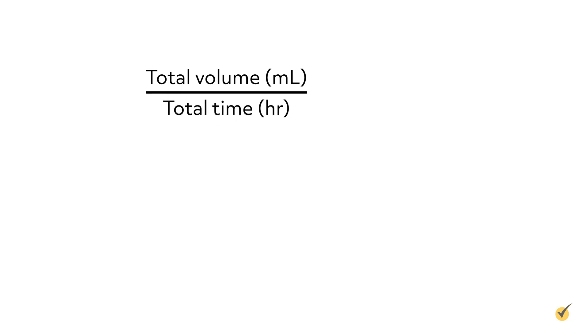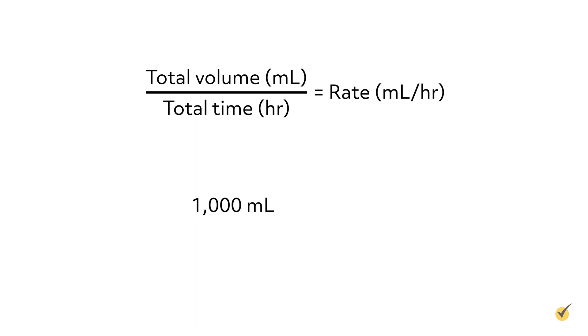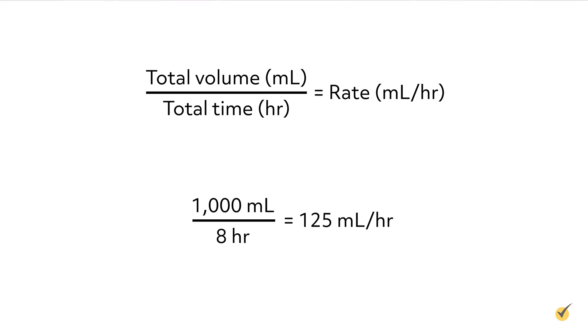If you simply need to figure out the infusion rate — the milliliters per hour to infuse — take the total volume in milliliters divided by the total time in hours that the medication is ordered to be infused over, to equal the rate in milliliters per hour. For example, if you have 1,000 milliliters normal saline to infuse over 8 hours, take 1,000 milliliters divided by 8 hours to equal 125 milliliters per hour.